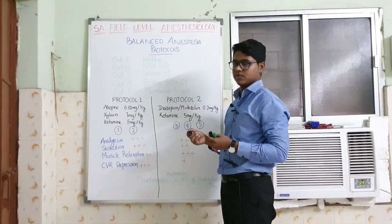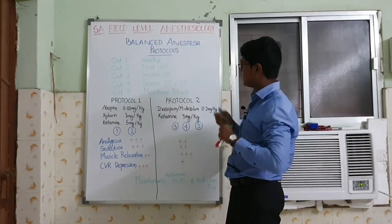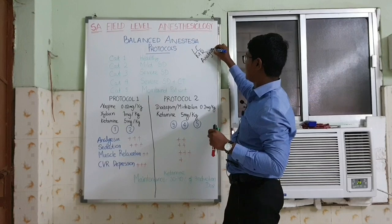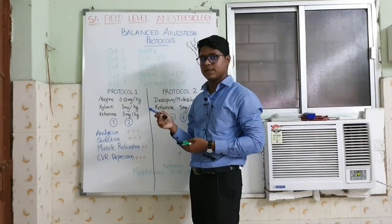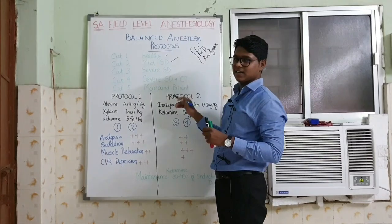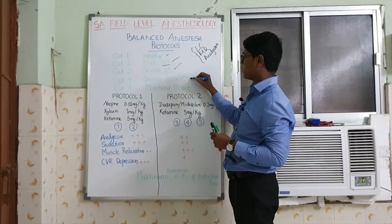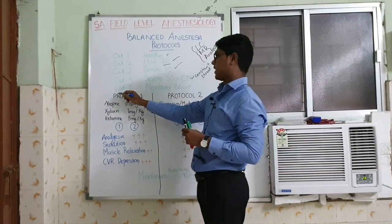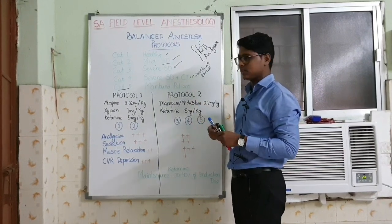Anesthesia means loss of consciousness, but we do not want only loss of consciousness. We have to use balanced anesthesia protocols, which means achieving: loss of consciousness, muscle relaxation, and analgesia. If you are achieving these three things, your protocol is balanced. Before going to protocols, we should know patient categorization: Category 1 — healthy patients; Category 2 — mild systemic disease; Category 3 — severe systemic disease; Category 4 — severe systemic disease that is a constant threat to life; Category 5 — moribund patient.